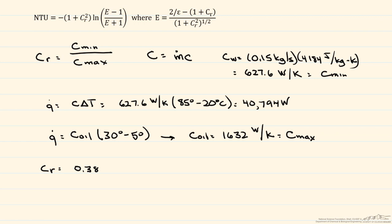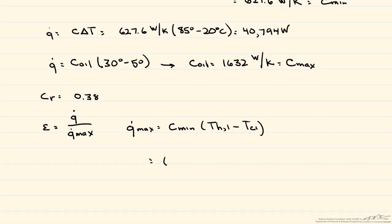So the next thing we're going to need to find is this epsilon, which is the effectiveness. And that's equal to the heat transfer rate divided by the maximum heat transfer rate. So we have our Q dot. Now we have to find our Q_max. And that's equal to the minimum heat capacity rate times the inlet temperature of the hot stream minus the inlet temperature of the cold stream. And so when we write that out, that's going to be equal to 627.6 watts per K, 85 degrees minus 5 degrees, and our Q_max is equal to 50,208 watts.